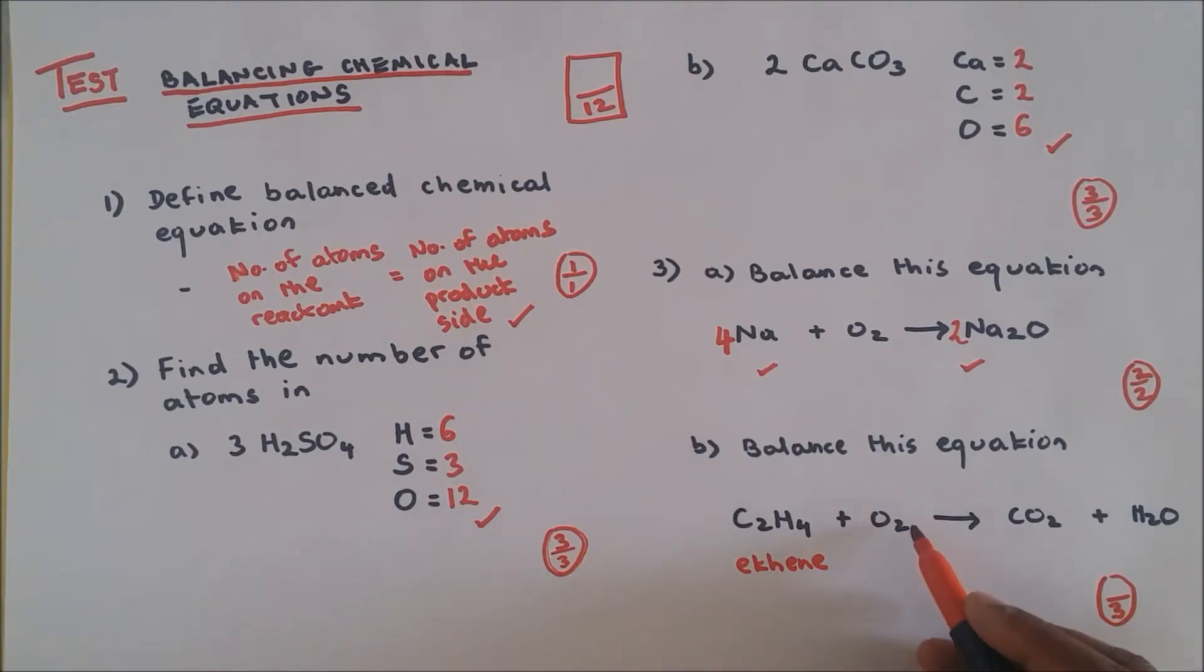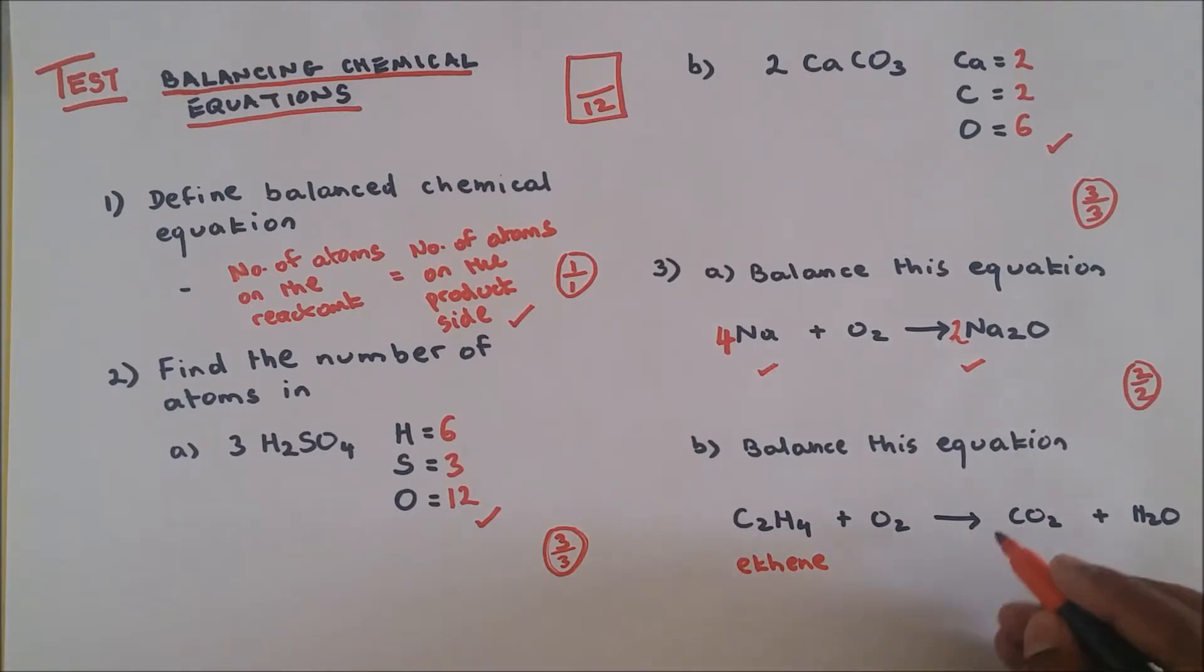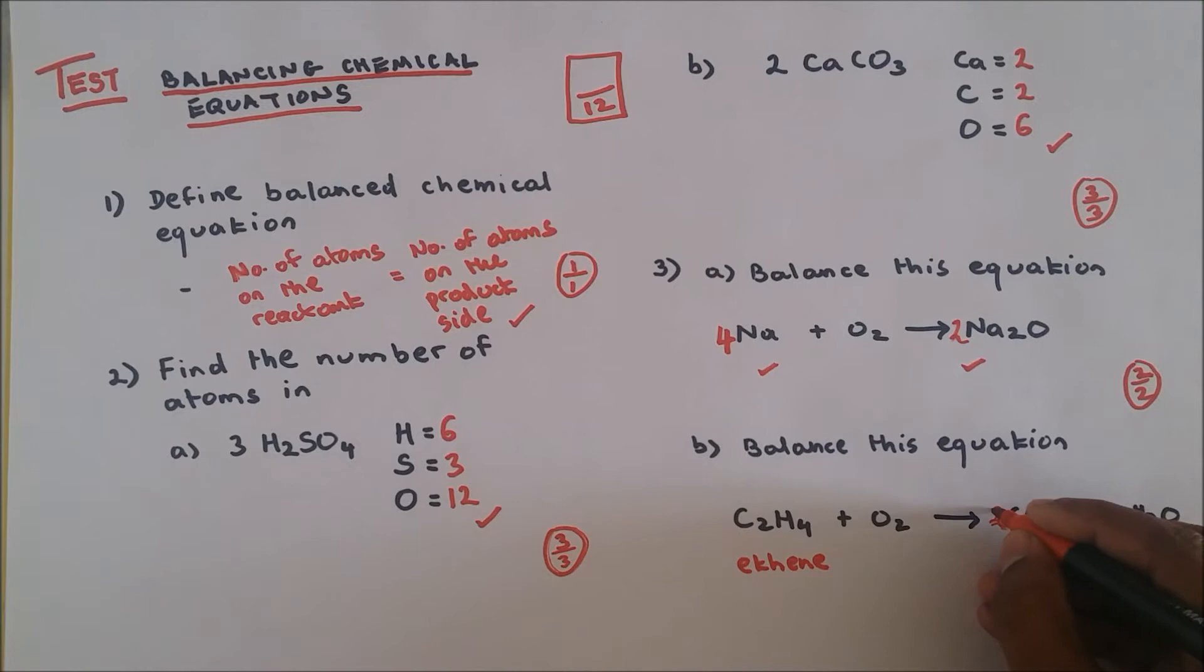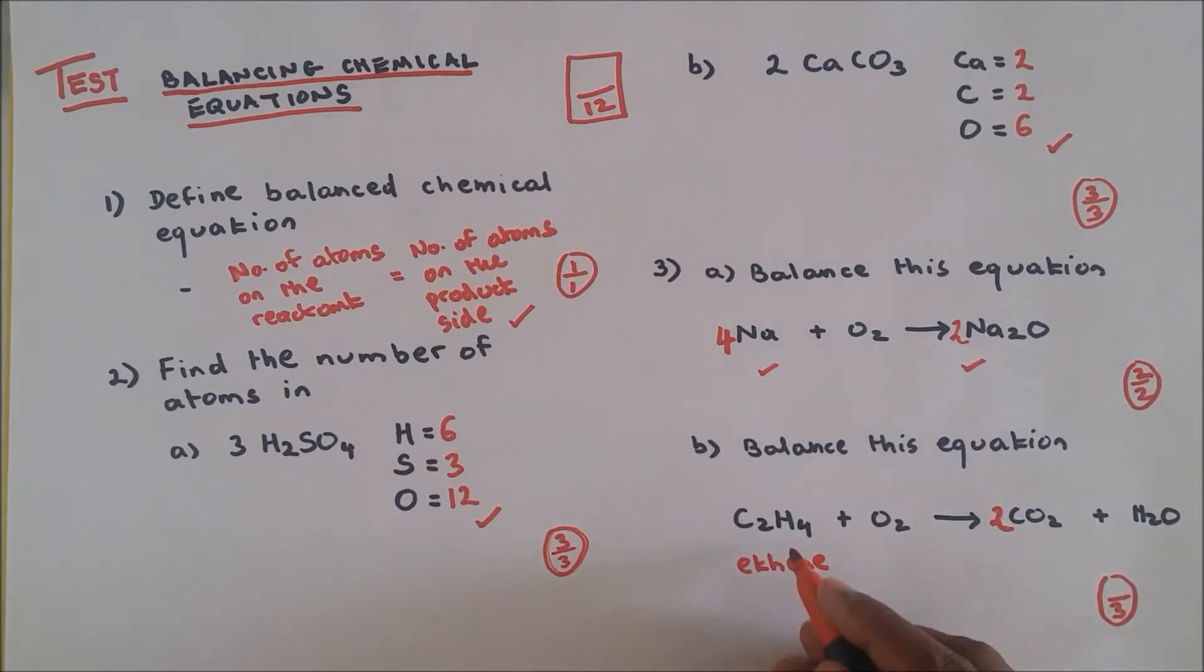Balancing a combustion reaction is a bit tricky, okay? So what you have to do, leave the oxygen out, do the oxygen as last. This is the way to do it. You got two carbon and one carbon over here, so you put two over here. Now you have four hydrogen. You got two hydrogen over here, so you put two over here.